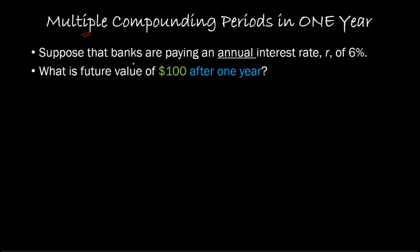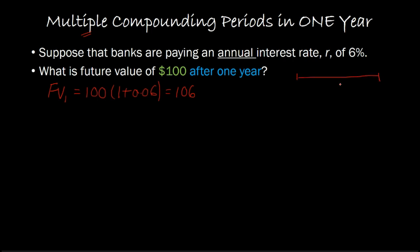In the past, you have seen situations where I'd give you something like an annual interest rate of 6% — we'd say the bank is paying that — and we'd ask ourselves: what is the future value of $100 after one year? That's rather easy. The future value of $100 after one year would simply be 100 × (1 + 0.06), because you'd earn an interest rate of 6% on your $100, so this would be worth $106. On a simple timeline, you are depositing $100 here, and then one year later you'd have $106.